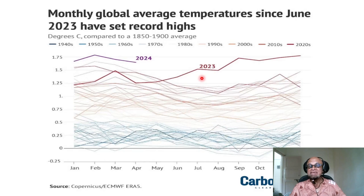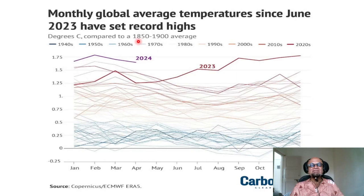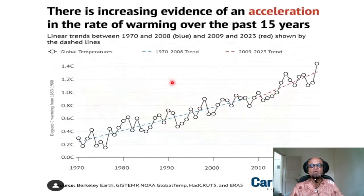Does that mean the 2020s will also be much warmer? Not necessarily — 2024, 25, 26 may be cooler, so we may come back down. But this is not good, and 2024 has again jumped way out of the previous anomaly, so we are seeing some of the warmest temperatures since 1850. We have to worry about what will happen if we continue this way.